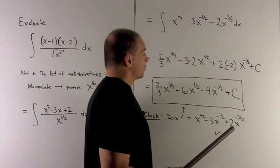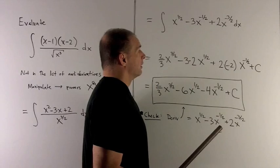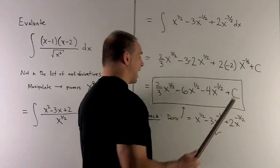And then I take minus 3 halves. I add 1 to that. I get minus 1 half. Flip that over. That gives me minus 2. Then we add on the constant.